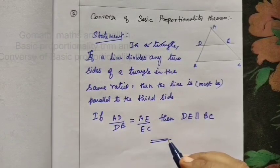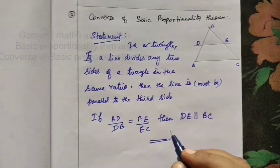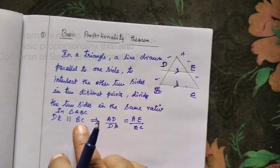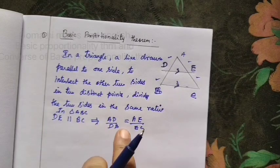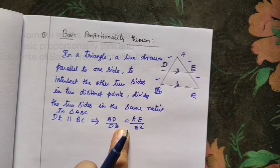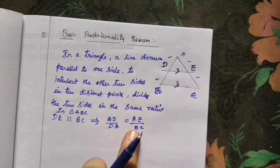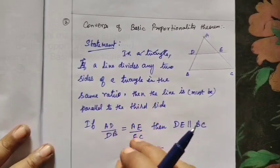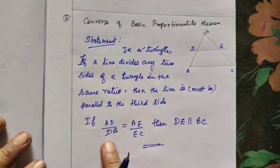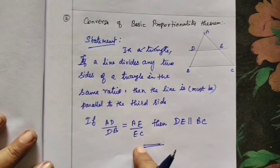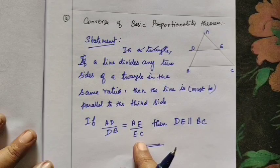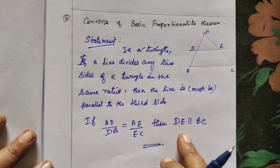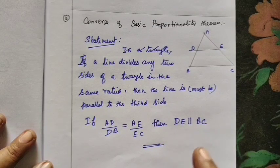This is the converse of the Basic Proportionality Theorem. In the Basic Proportionality Theorem, it is given that the line is parallel, and we get the result that AD by DB equals AE by EC. In the converse, the ratios are given as equal, and we get the result that DE is parallel to BC.